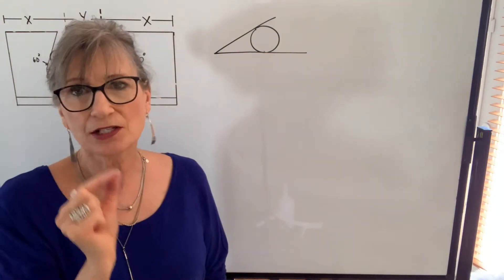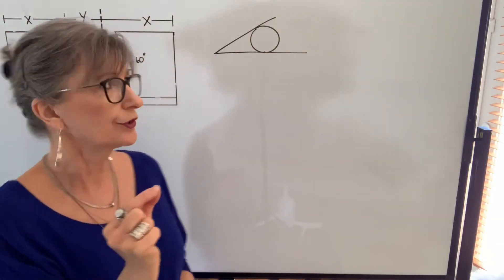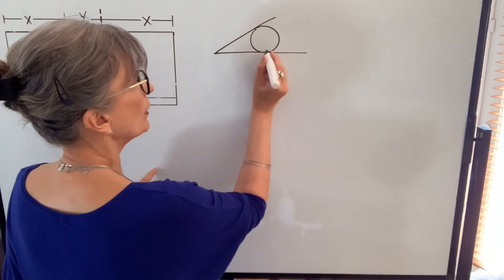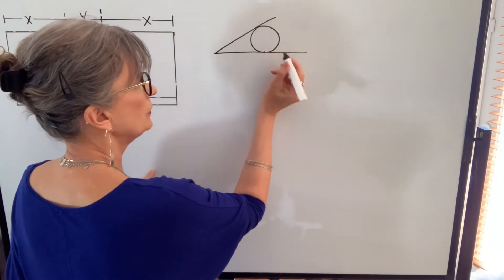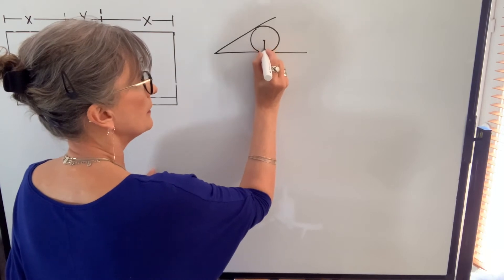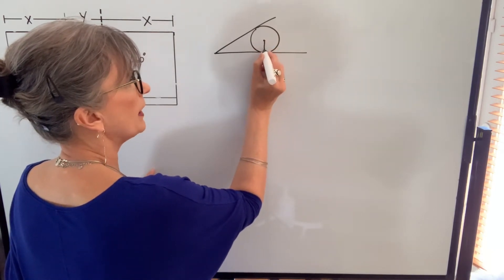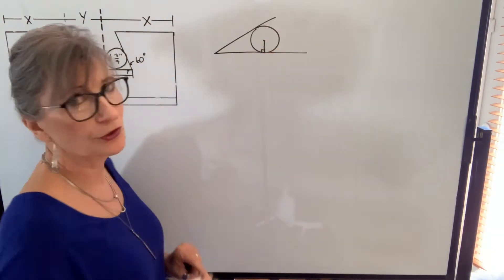which means it just touches that circle at one point, it doesn't go through the circle. That, where that line touches the circle, that creates a right angle with the radius of the circle at that point.